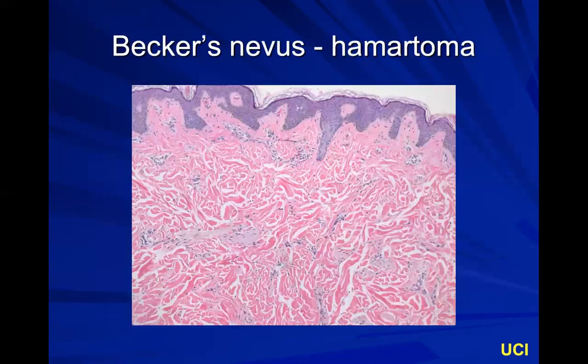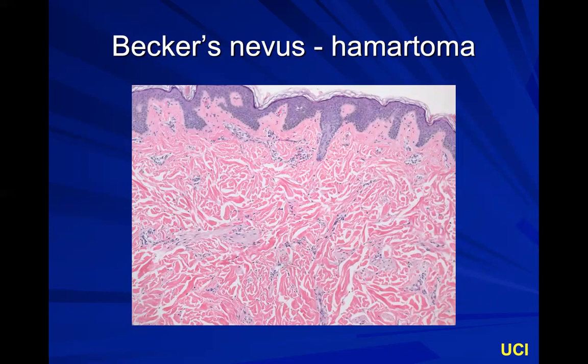A Becker's nevus has a hamartomatous proliferation of smooth muscle. The difference between a smooth muscle hamartoma and a leiomyoma: in Becker's, the main component is epidermal hyperplasia and hyperpigmentation — it's on the differential for early seborrheic keratosis, epidermal nevus, acanthosis nigricans, or confluent reticulated papillomatosis. If you get a nice punch biopsy and see an increased number of normal smooth muscle bundles — but not densely packed enough to be tumor-like — that's a smooth muscle hamartoma associated with Becker's nevus.